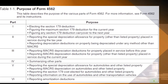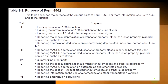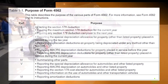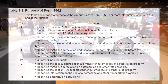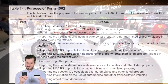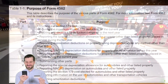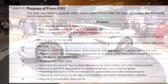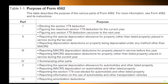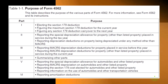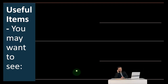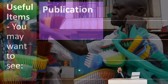Part 3 also covers reporting MACRS depreciation for property other than listed property placed in service during the tax year. Part 4 summarizes the other parts. Part 5 covers reporting the special depreciation allowance for automobiles and other listed property — automobiles have their own special rules — as well as MACRS depreciation on listed property, Section 179 cost elected for automobiles, and information on the use of automobiles and other transportation vehicles. Part 6 covers reporting amortization deductions.